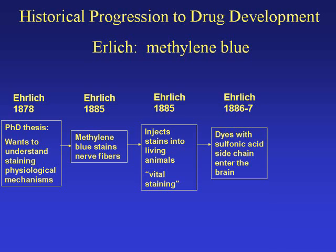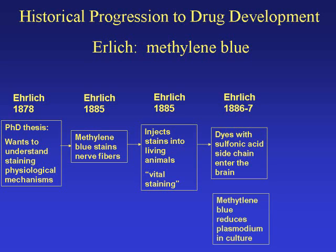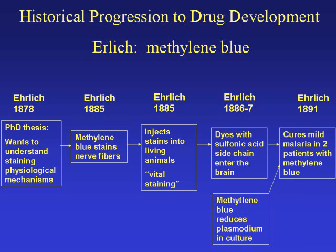As a direct result of this work, Ehrlich noticed that dyes with sulfonic acid side chains enter the brain — that is, they cross the blood-brain barrier. He also noticed that methylene blue would reduce the amount of plasmodium in vitro, that is, in laboratory cultures. In 1891, Ehrlich decided to inject patients who already had mild cases of malaria with methylene blue, and was able to cure two patients.